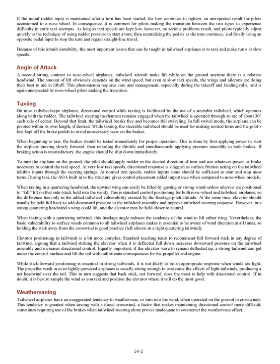When beginning to taxi, the brakes should be tested immediately for proper operation. This is done by first applying power to start the airplane moving slowly forward, then retarding the throttle and simultaneously applying pressure smoothly to both brakes. If braking action is unsatisfactory, the engine should be shut down immediately. To turn the airplane on the ground, the pilot should apply rudder in the desired direction of turn and use whatever power or brake is necessary to control the taxi speed. At very low taxi speeds, directional response is sluggish as surface friction acting on the tailwheel inhibits inputs through the steering springs. At normal taxi speeds, rudder inputs alone should be sufficient to start and stop most turns.